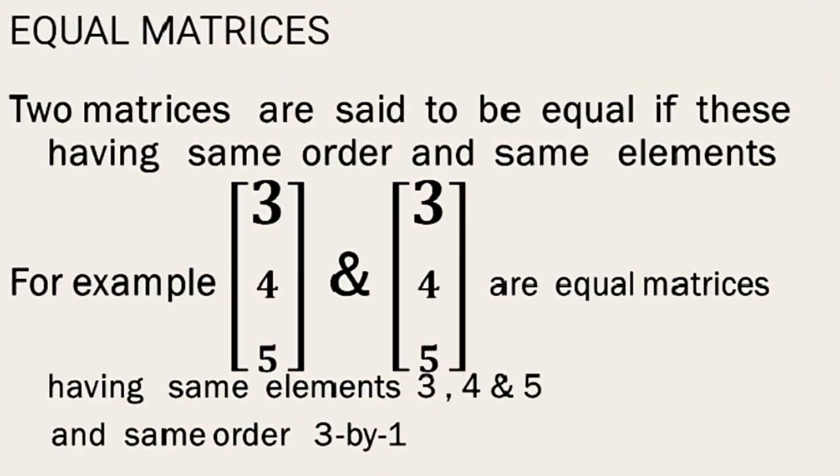If a matrix has same elements and also same order, for example it is 3, 4, 5 as a column and another is 3, 4, 5 as a row, it's not equal to this. Order also same and all elements should be same, then the matrices are called equal matrices.